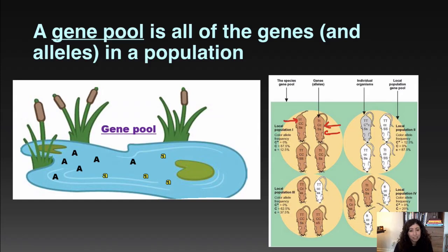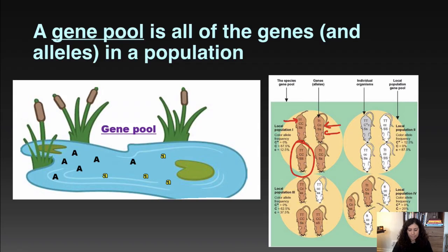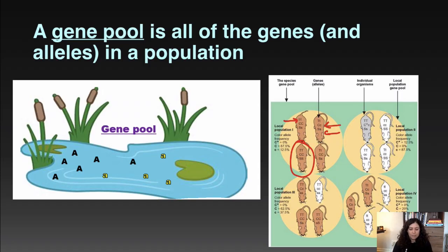Gene pools are important because we need to start thinking not just about the genes of a single individual, but the genes of all the mice together as a population. In the evolution unit, instead of thinking about the alleles of a single individual, we need to think about the alleles of the entire population and how that changes over time. That's why we need to start thinking about gene pools.